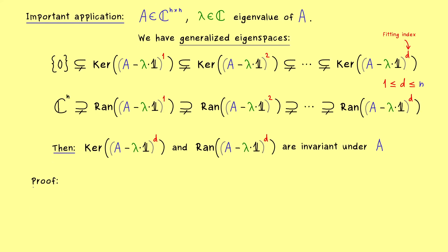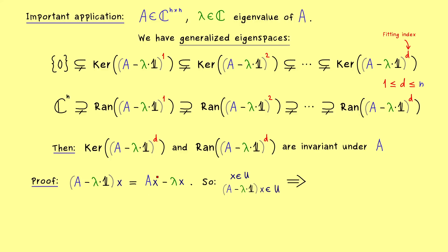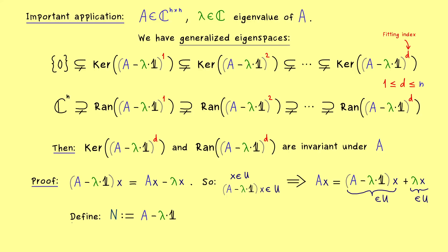To prove invariance, it is easier to work with the matrix A minus lambda times the identity. This is not a big difference: if we apply a vector x to this matrix, we get A times x minus lambda times x. So if x lies in a given subspace U, and we can show that (A − λI)x also lies in U, then A times x is a linear combination of two elements of U — since (A − λI)x and lambda times x both lie in U. We can check invariance using A − λI instead of A. Substituting this matrix by the letter N makes all the notation much shorter.